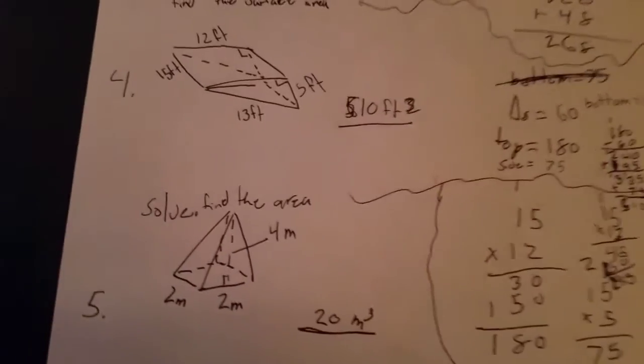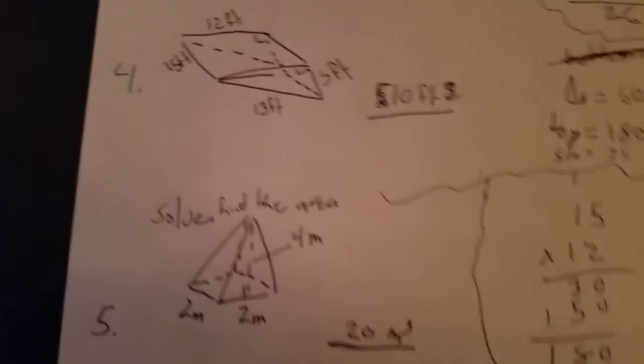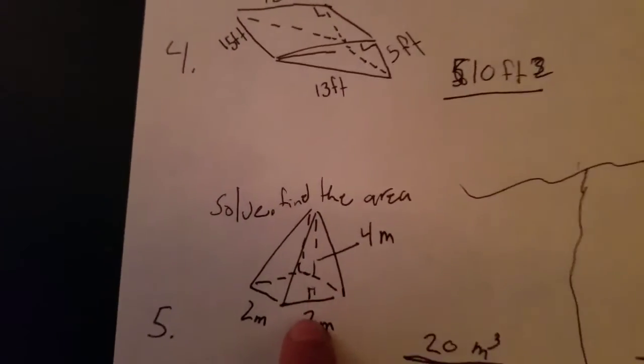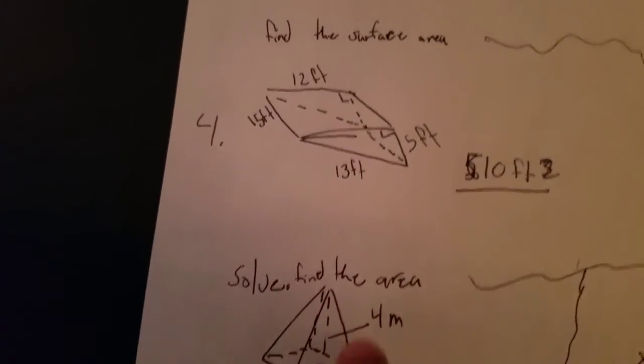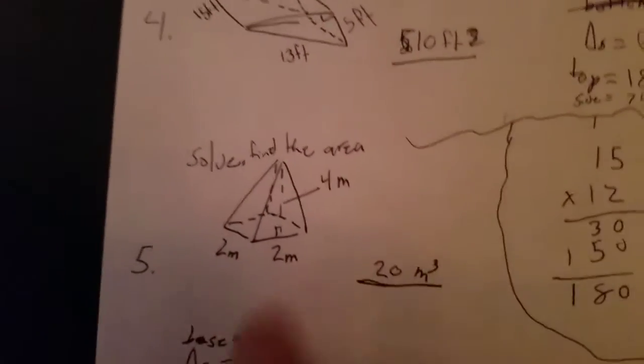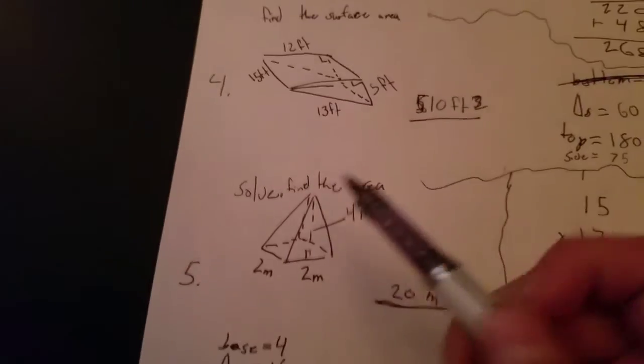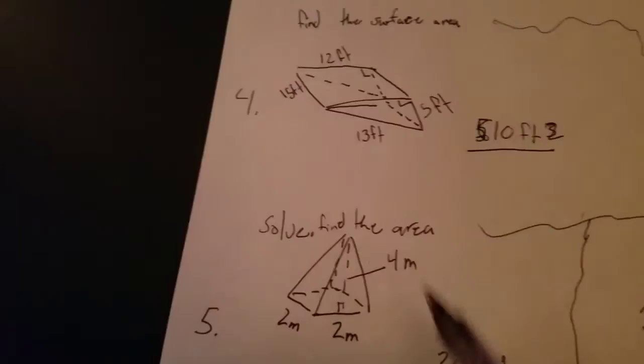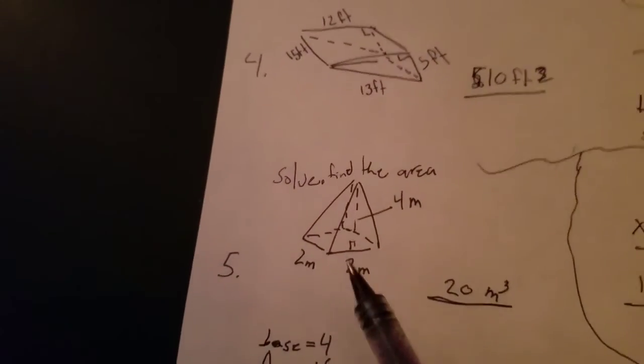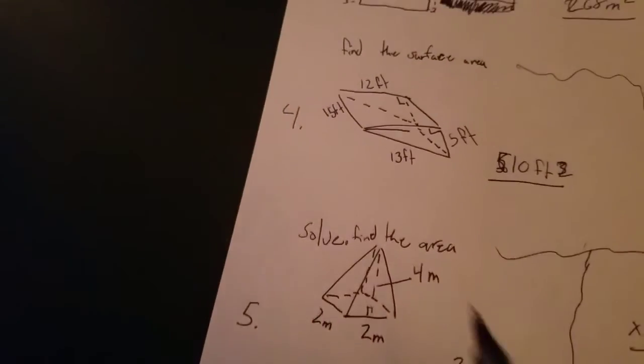So this one says to find the area. And so we can break this up into it. So we have the base. So the base is 2 times 2 which equals 4. And then for the triangles, it would be half the base times the height. So that would be 1 times 4 equals 4 times 4.